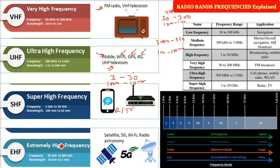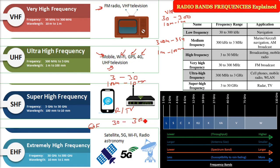Then we have the Extremely High Frequency (EHF), ranging from 30 gigahertz to 300 gigahertz. The wavelength is very small — from 10 millimeters to 1 millimeter.